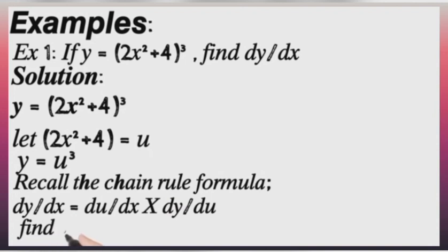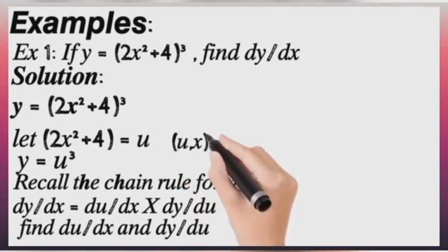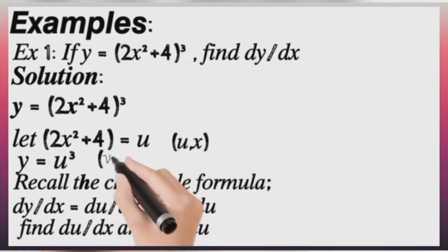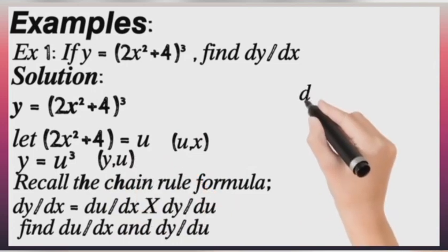How do we get du/dx? du/dx is because of the equation connecting u and x. dy/du is because of the equation connecting y and u. So du/dx from the equation connecting u and x, we have 2x squared plus 4. When you differentiate it,